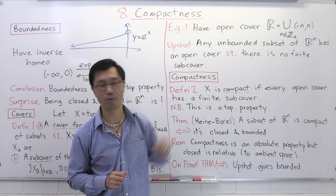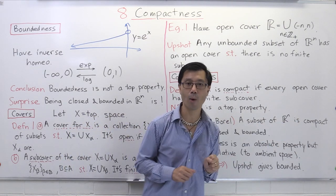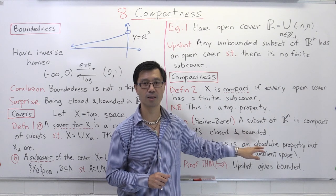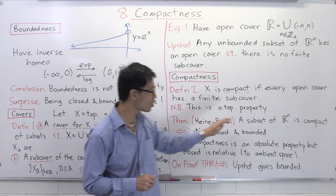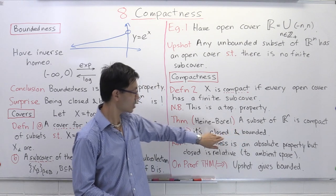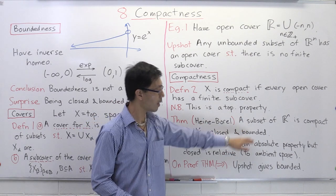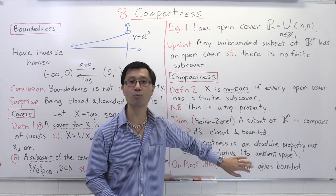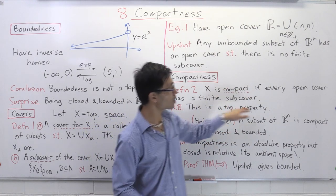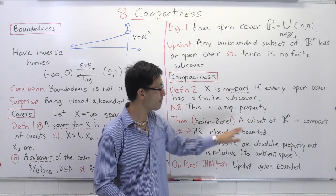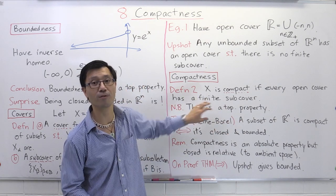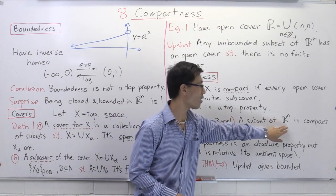This is the famous Heine-Borel theorem. A subset of R^n is compact precisely when it's both closed and bounded. So you can characterize this notion of closed and bounded. Bounded normally uses the notion of metric, so this condition seems like it uses the metric. But it turns out you can get rid of the metric concepts by using the concept of compactness, which is purely topological, and hence show that closed and boundedness inside R^n is a purely topological property.